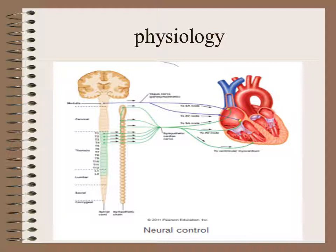The conducting tissue of the heart is controlled by the autonomic nervous system in the form of sympathetic and parasympathetic nerve supply. The sympathetic nerve supply supplies the atrium, the AV node, the bundle of His and the ventricles. The parasympathetic nerve supply, in the form of the vagal nerve, supplies only the atrium and the AV node, but not the bundle of His, bundle branches, Purkinje fibers or the ventricles — a phenomenon called the vagal escape phenomenon, which allows the heart to escape a very high vagal tone to prevent cardiac standstill.